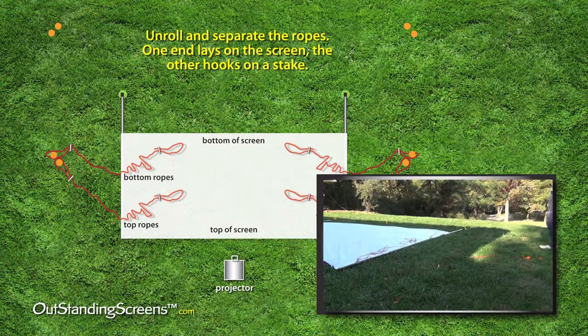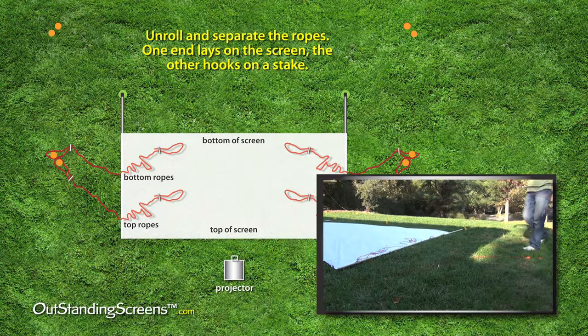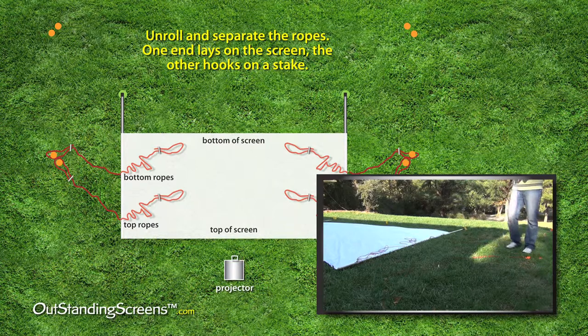Unwind the bottom ropes and do the same. One goes to the other front stake and the other lays on the screen. We just want to get the back ropes out of the way for now, so we lay them on the screen.